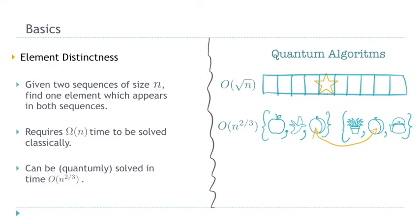The second problem is element distinctness. The variant I work with in this talk has two separate lists of size n, and we want to know if there is one element shared between them. That problem requires Ω(n) time classically, but with a quantum algorithm we can solve it in time n^(2/3).